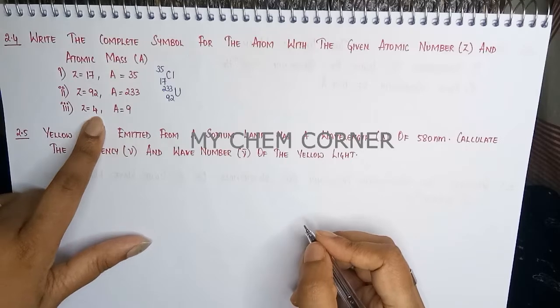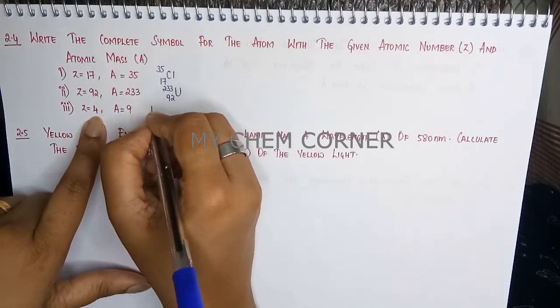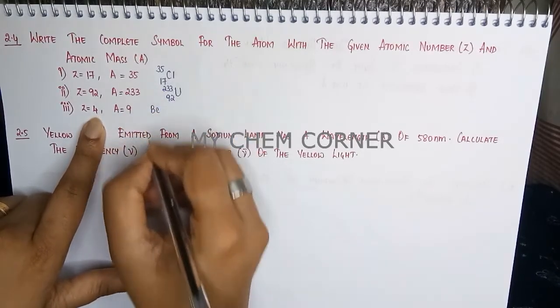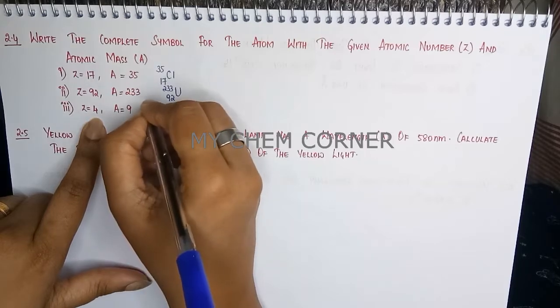The next one: Z is 4, which means atomic number 4. Your element here is beryllium. 4 is written down and 9 on top.